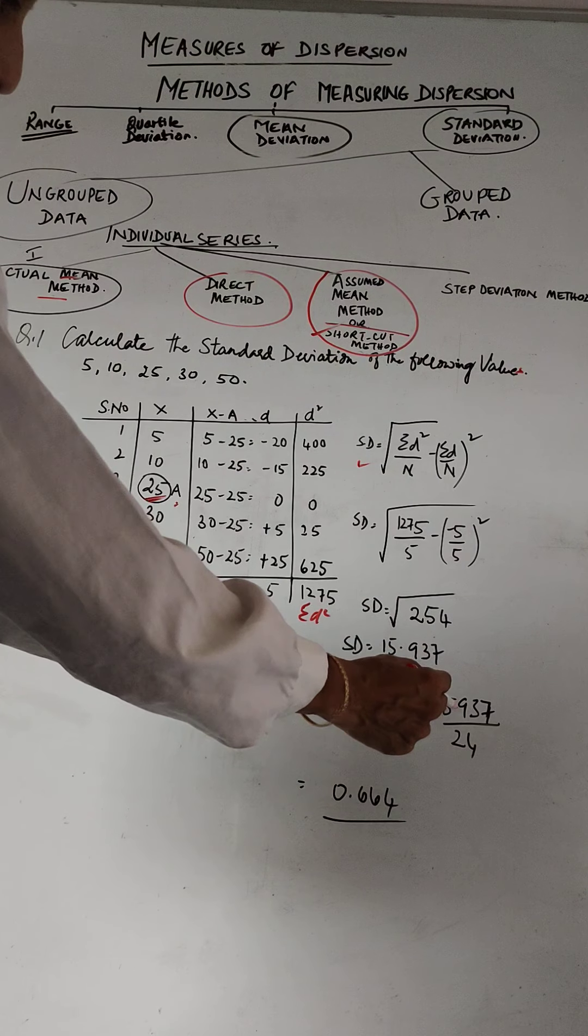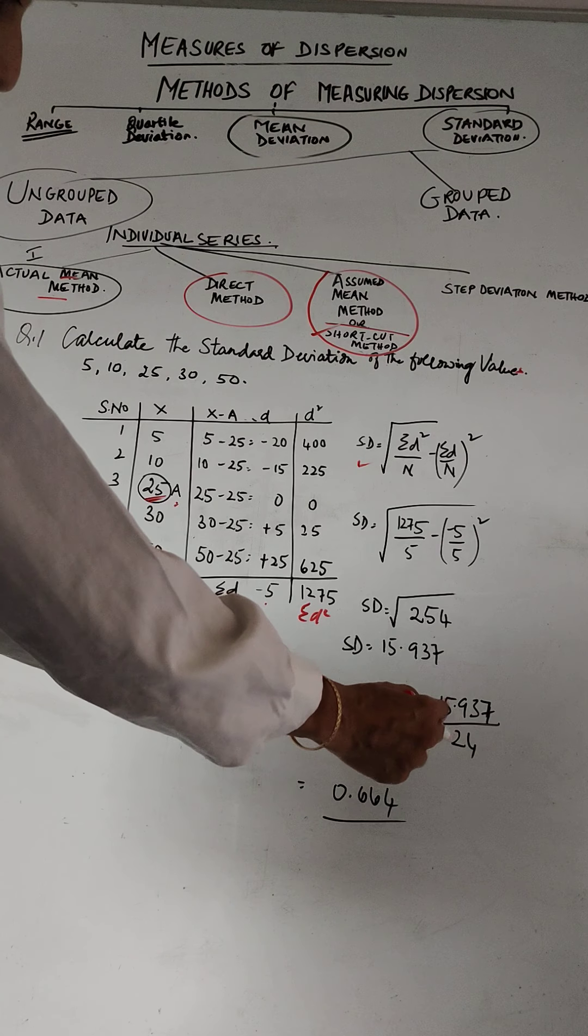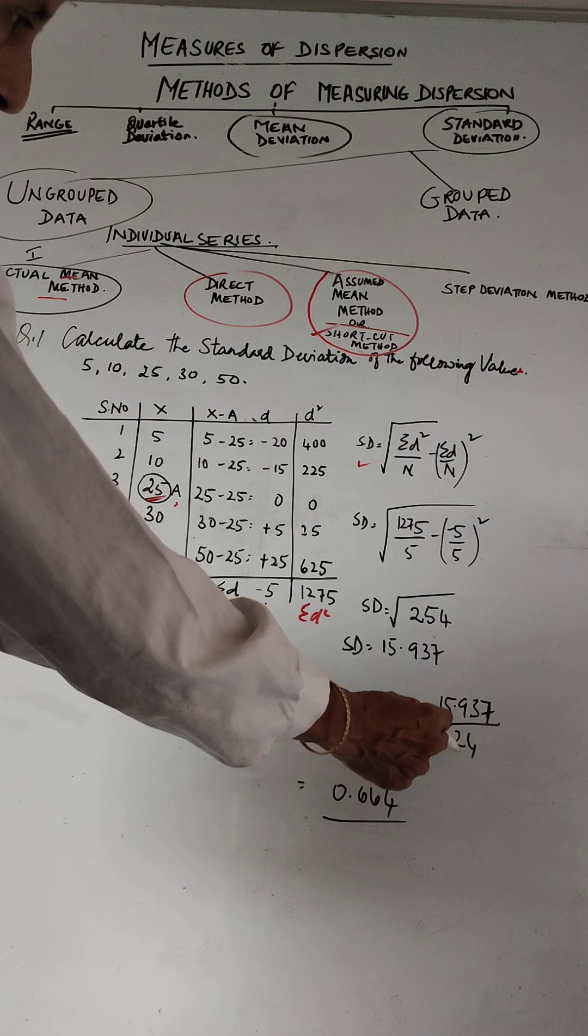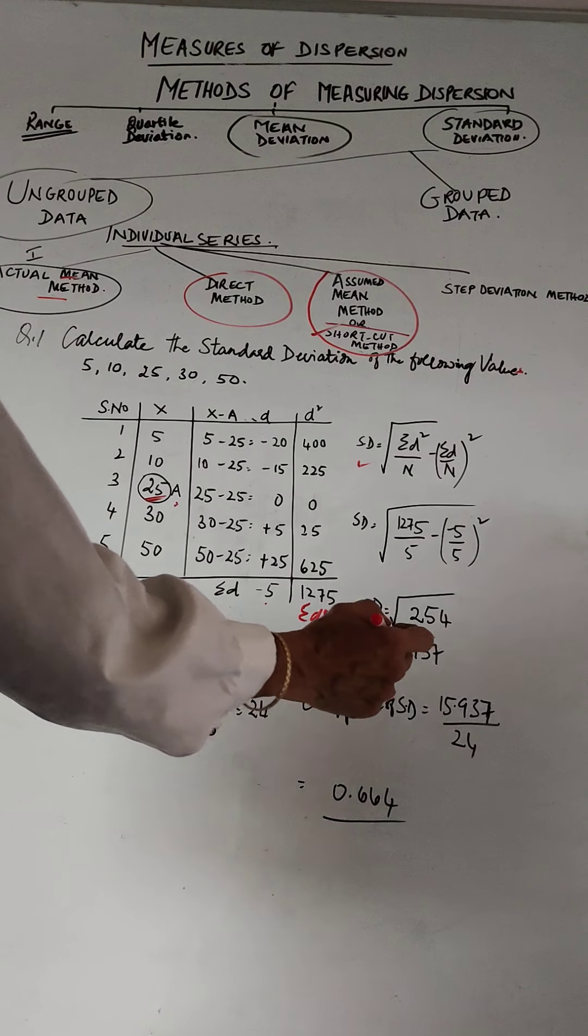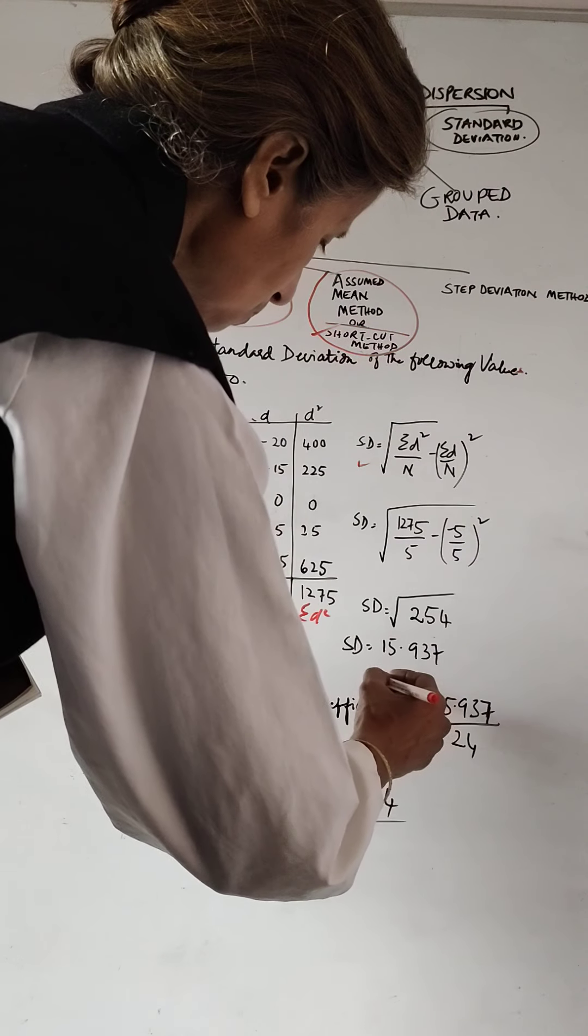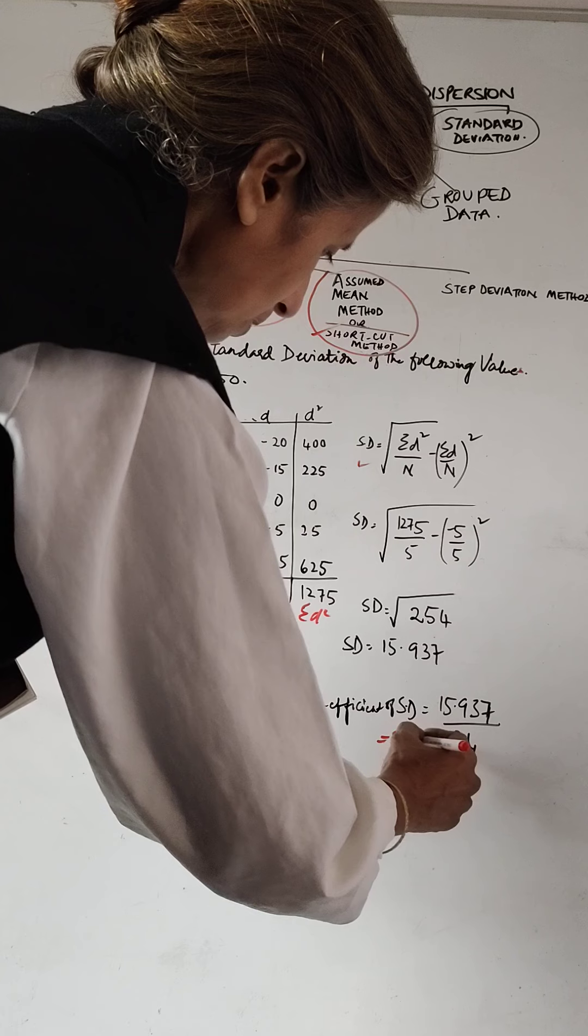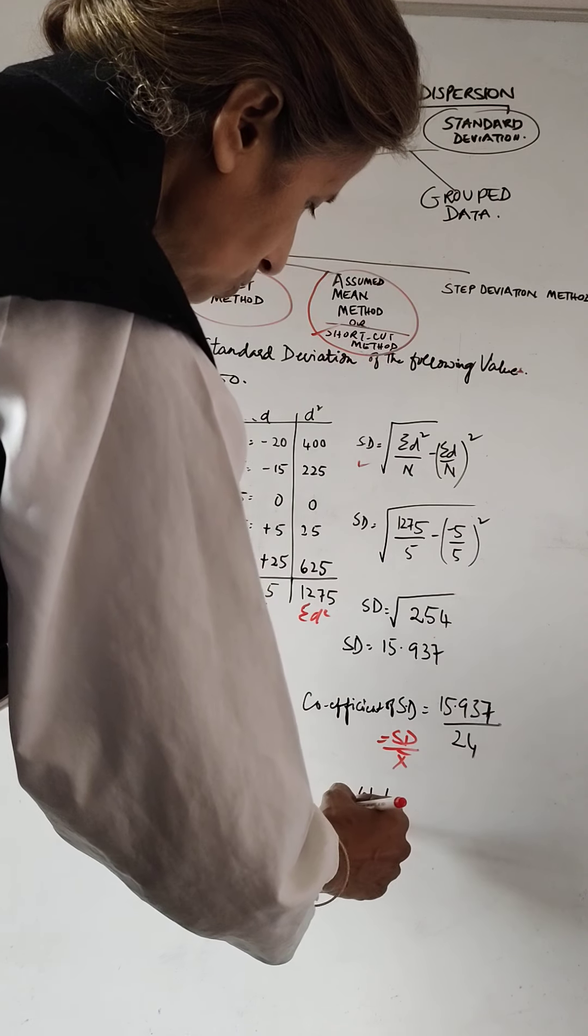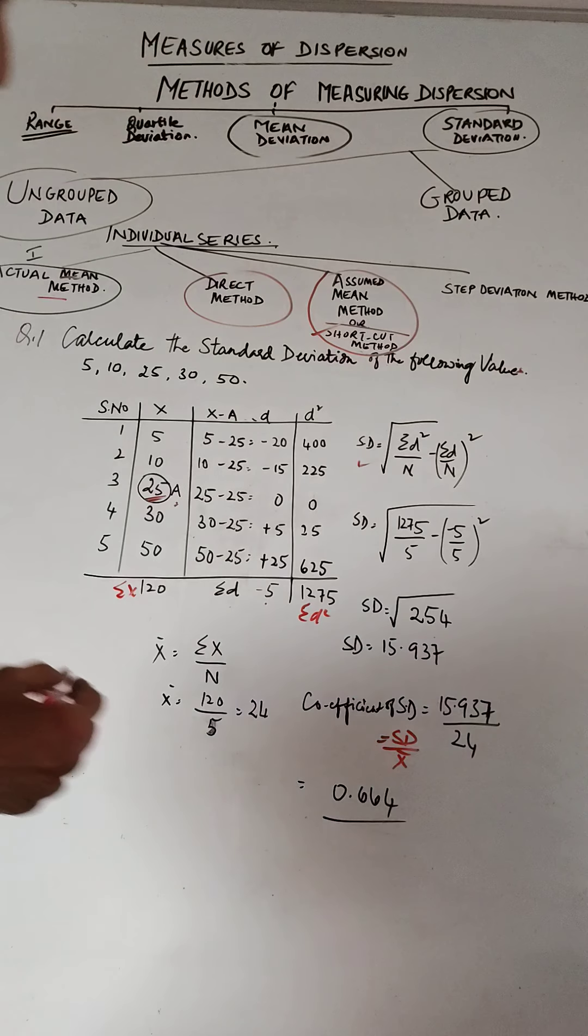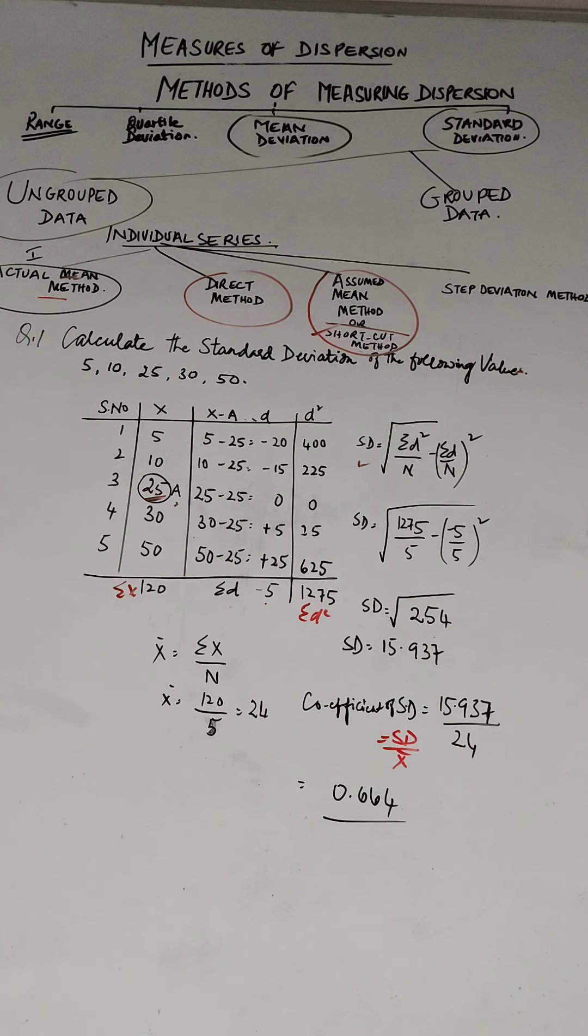I didn't write the formula, so coefficient is standard deviation divided by X bar. So you get what is known as coefficient, which is 0.664.